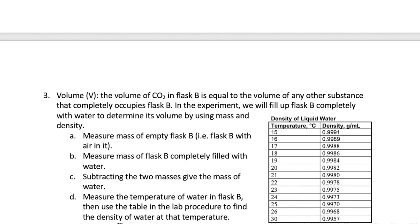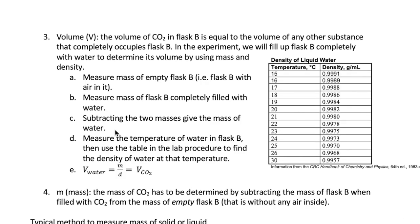Now let's talk about measuring volume of CO2 in the flask. Remember that volume is just space available for a substance to occupy. This means that we need to find the actual space available in flask B. We can do this by filling that space up completely with water and then using density and mass to calculate the volume of water in the flask.